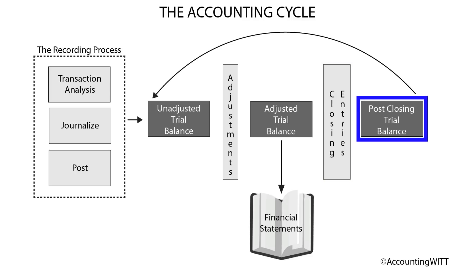After closing entries are made, the trial balance is said to be post-closing. The post-closing trial balance is the starting point for the next period's unadjusted trial balance. In conclusion, the accounting cycle is the process of identifying, recording, organizing, editing, and communicating the activity of a business, and then preparing for the next period's information by closing the books.